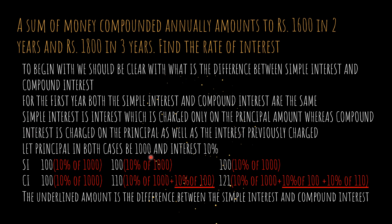Let the principal in both cases be 1000 and the interest percent be 10%. For simple interest, the first year it will be 10% of 1000, which is 100. Again in the second year it will be 10% of 1100, and so on — every year it will be 100 only.